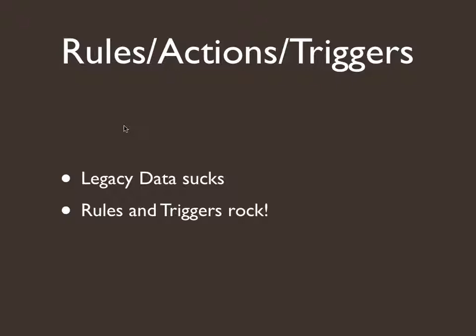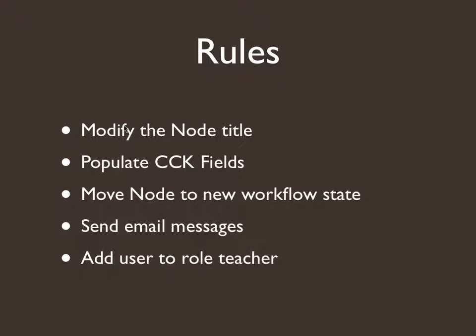I also use a couple other modules with this: actions, rules, and triggers. I could have made this site a lot simpler if I didn't have about 500 agreements already in the existing database — that's some of the complicated stuff I've had to work around with legacy data. The rules module really came through with a lot of the problems I had. Using rules in conjunction with Automatic Node Title, I've been able to modify the node title when a field is updated. You can use the Token module to modify your node title after it's been submitted by the author. You can populate CCK fields, move nodes to new workflow states, send email messages, and add users to certain roles.